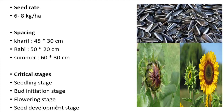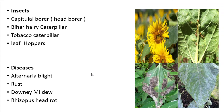Coming to insect pests, the capitulum borer or head borer is the most serious pest in sunflower. The larva at the early stage feeds on the leaves, then bores into the capitulum or head of the sunflower and feeds on the developing seeds, eventually causing the sunflower head to rot. Bihar hairy caterpillar and tobacco caterpillar both voraciously feed on the under surface of the leaves.